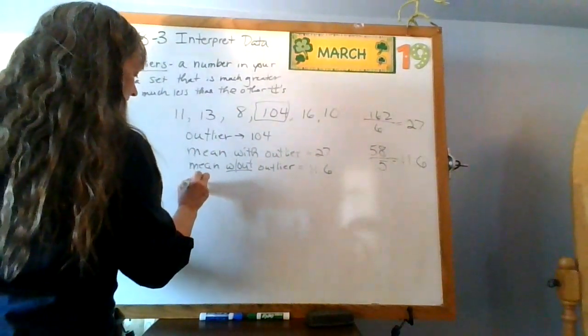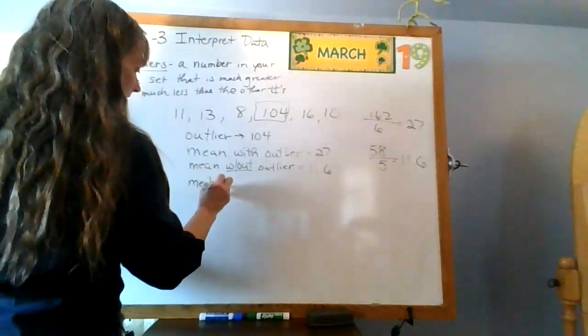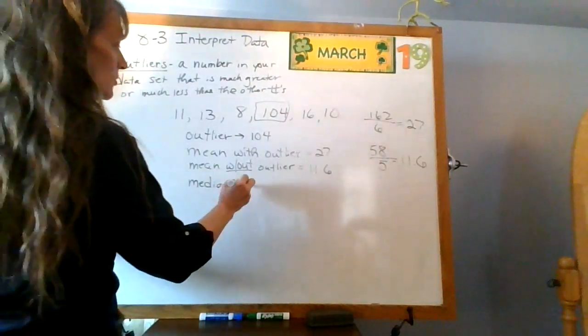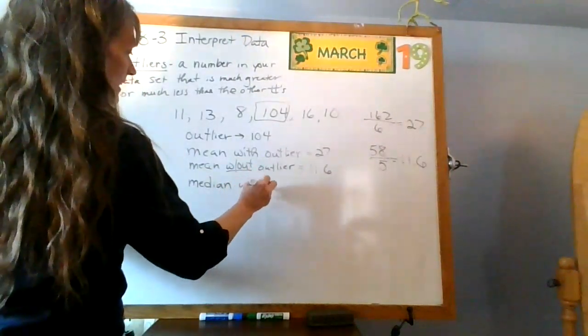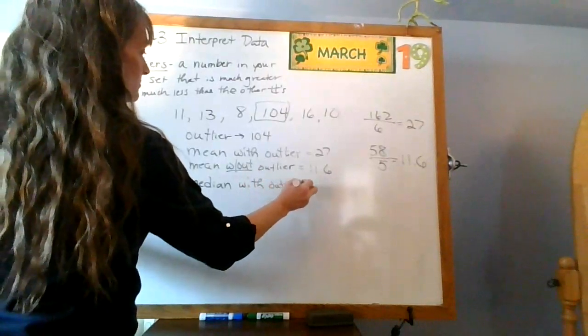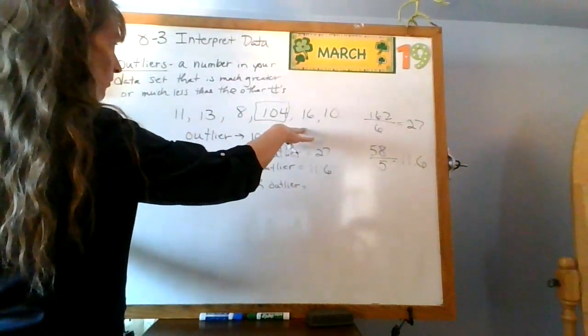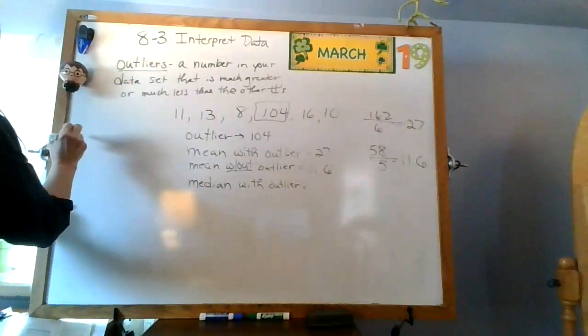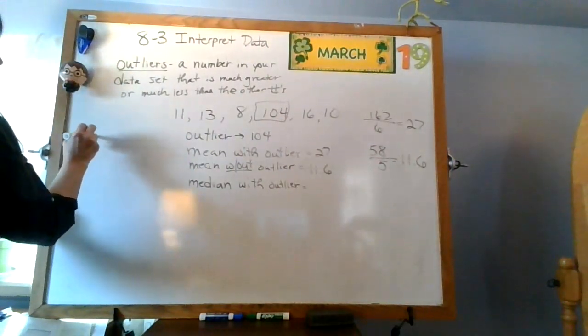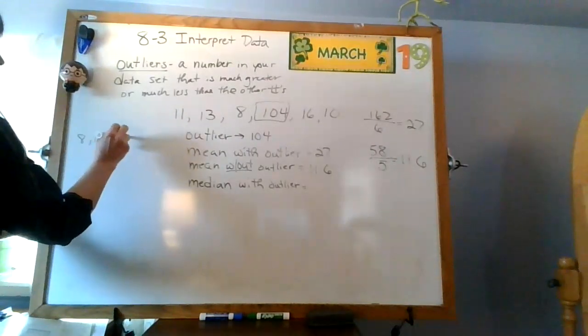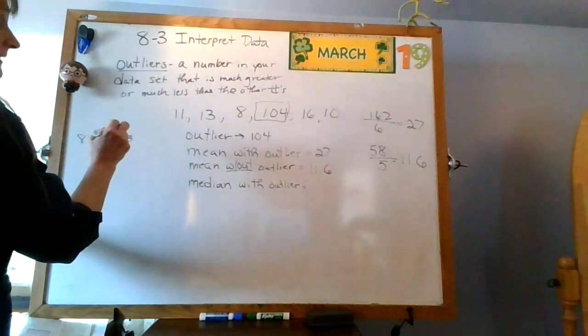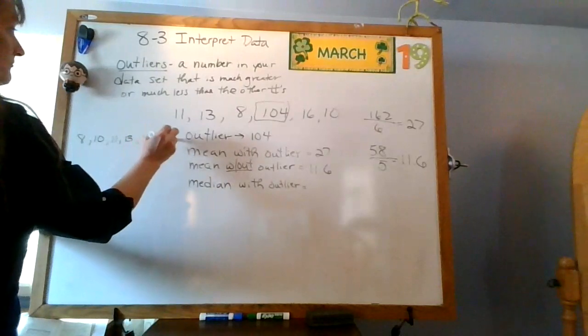What about our median? So, my median with the outlier. It means I'm going to include it. So I've got to rearrange those in order. So that would be 8, 10, 11, 13, 16, and 104.